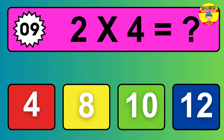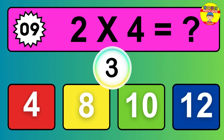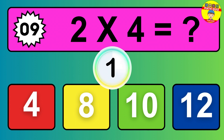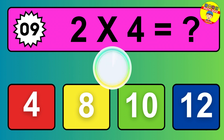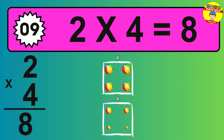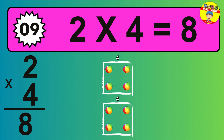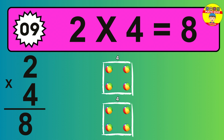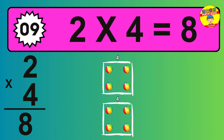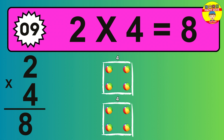Question 9. 2 times 4 equals what? The answer is 2 times 4 is 8. To calculate, we have 2 groups with 4 balls each one. So how many balls do we have? 8 balls.